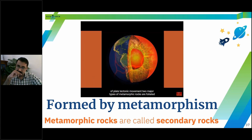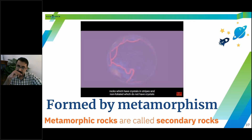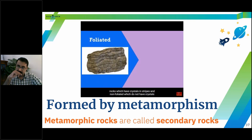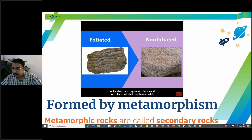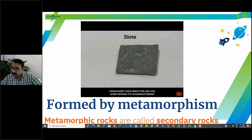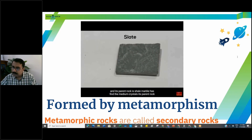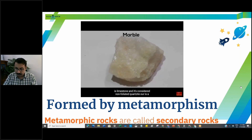Metamorphic rocks can also form at areas of plate tectonic movement. Two major types are foliated rocks, which have crystals arranged in stripes, and non-foliated, which do not. Slate has very small minerals, is considered foliated, and its parent rock is shale. Marble has fine to medium crystals, its parent rock is limestone, and is considered non-foliated.